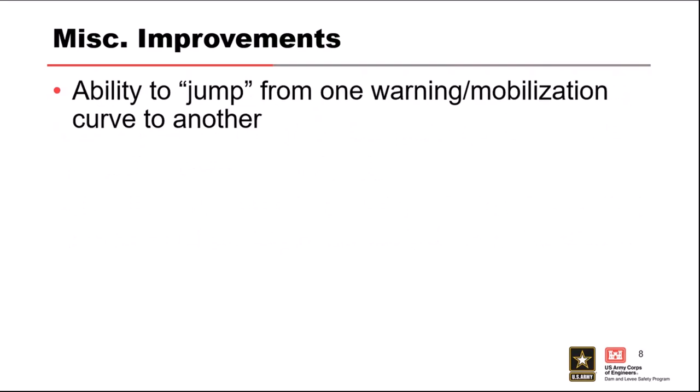Attributed jumping from one warning mobilization curve to another: every structure must be assigned to an EPZ and can't be assigned to more than one currently, but that's not how reality works. If you're downstream in a spillway flow zone, you'd receive a warning before a breach even occurs. Once a breach warning comes in as a secondary message, those who already started evacuating from the spillway zone will have much more reason to evacuate — they're jumping from one PAI curve to another. Currently LifeSim doesn't support this, so we want to work out the best way to overlap EPZs. Maybe not in 3.0, but in the future for sure.